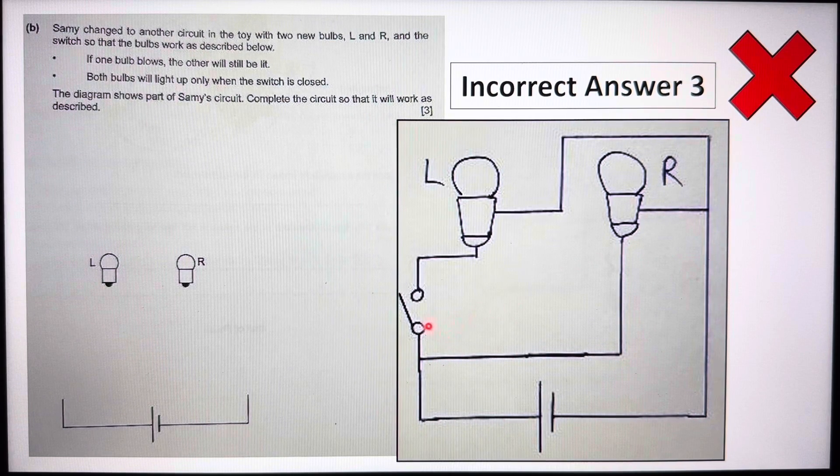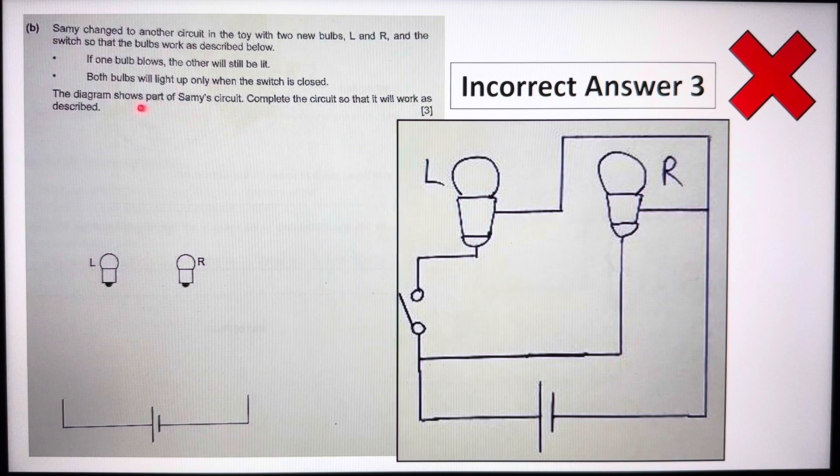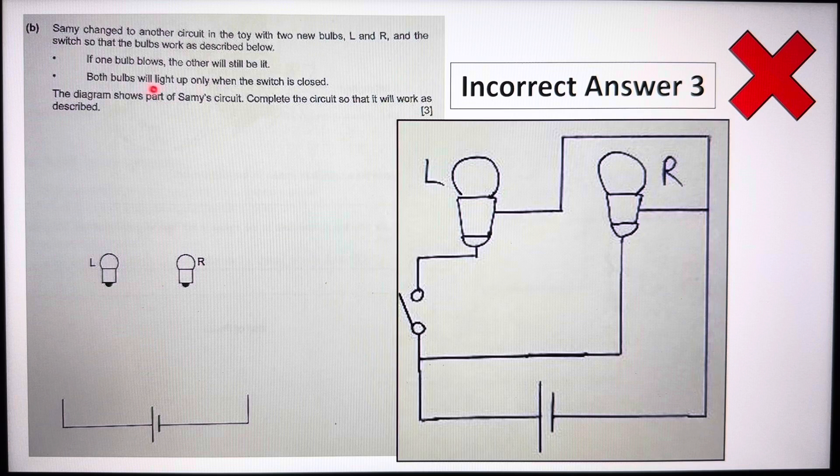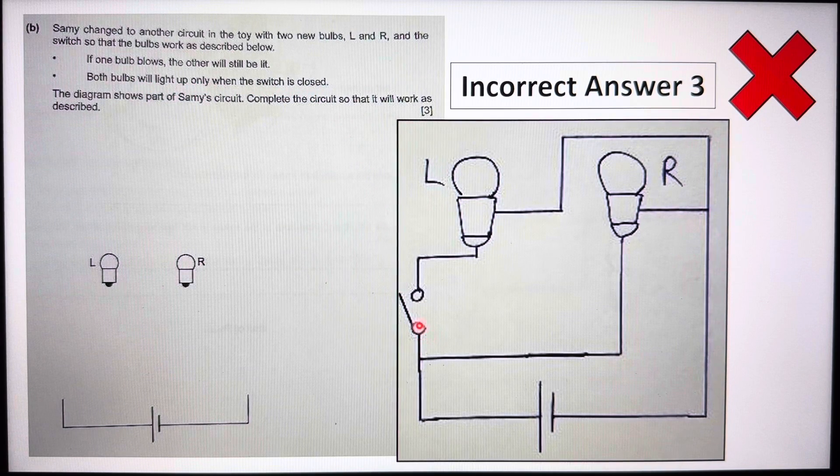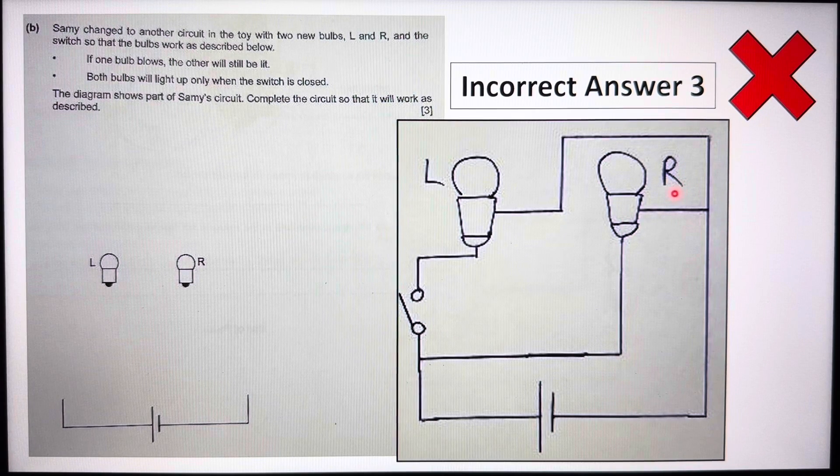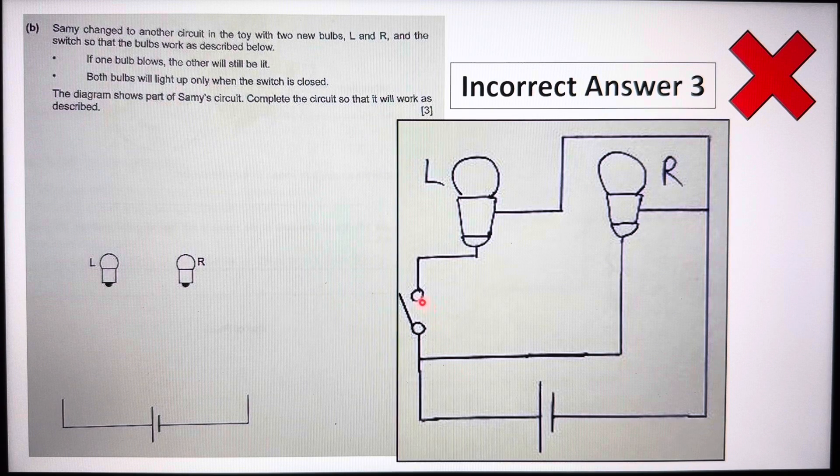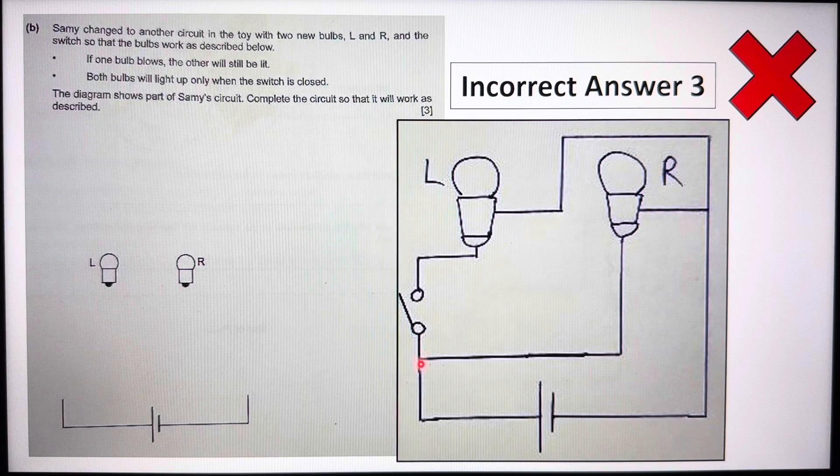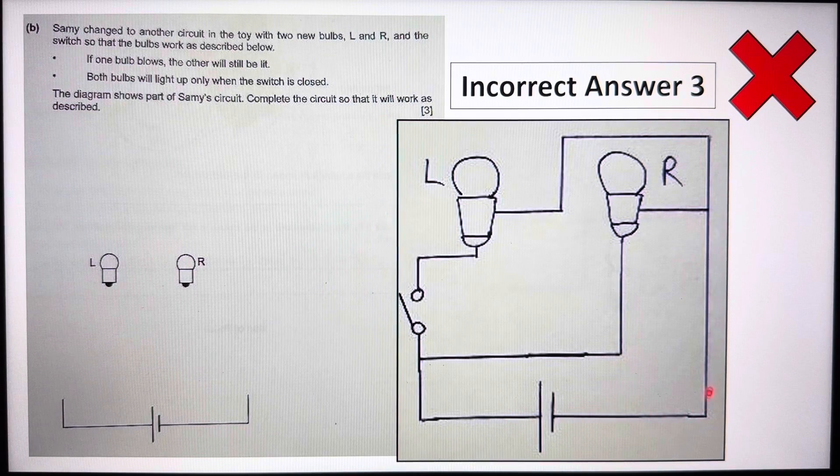In fact, the switch is only controlling bulb L. So it goes back to this criteria on this part. Both bulbs will light up only when the switch is closed. So even when I don't close the switch, bulb R in this arrangement will be lit or lit up. So as mentioned, the switch cannot be here, it has to be along this line, this line here.